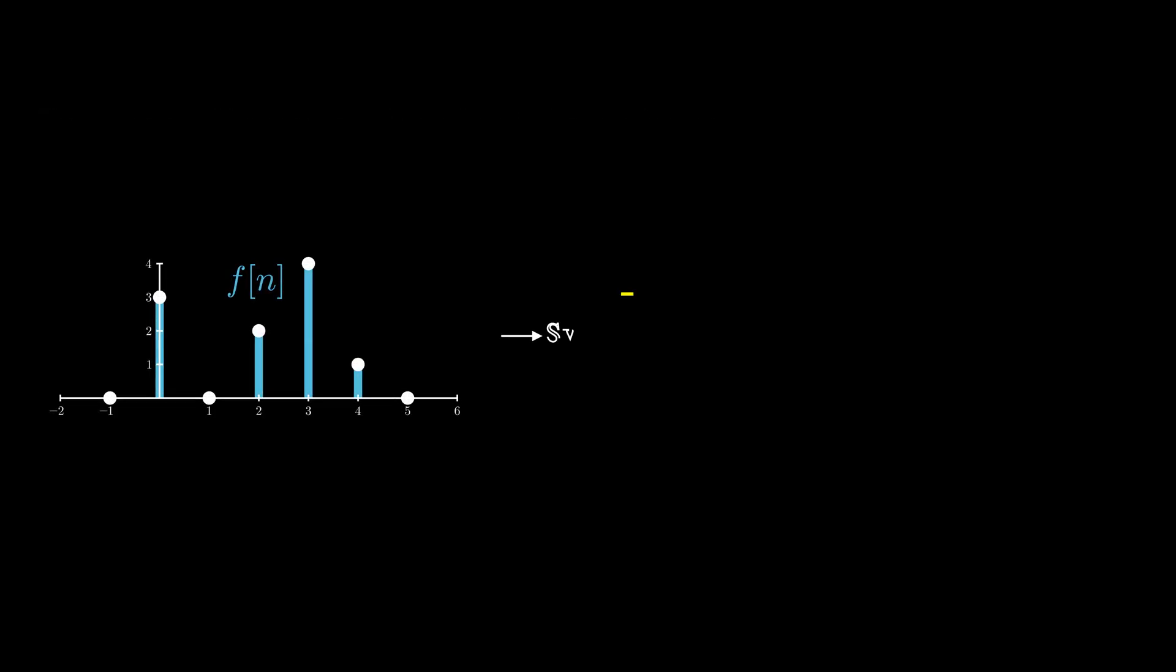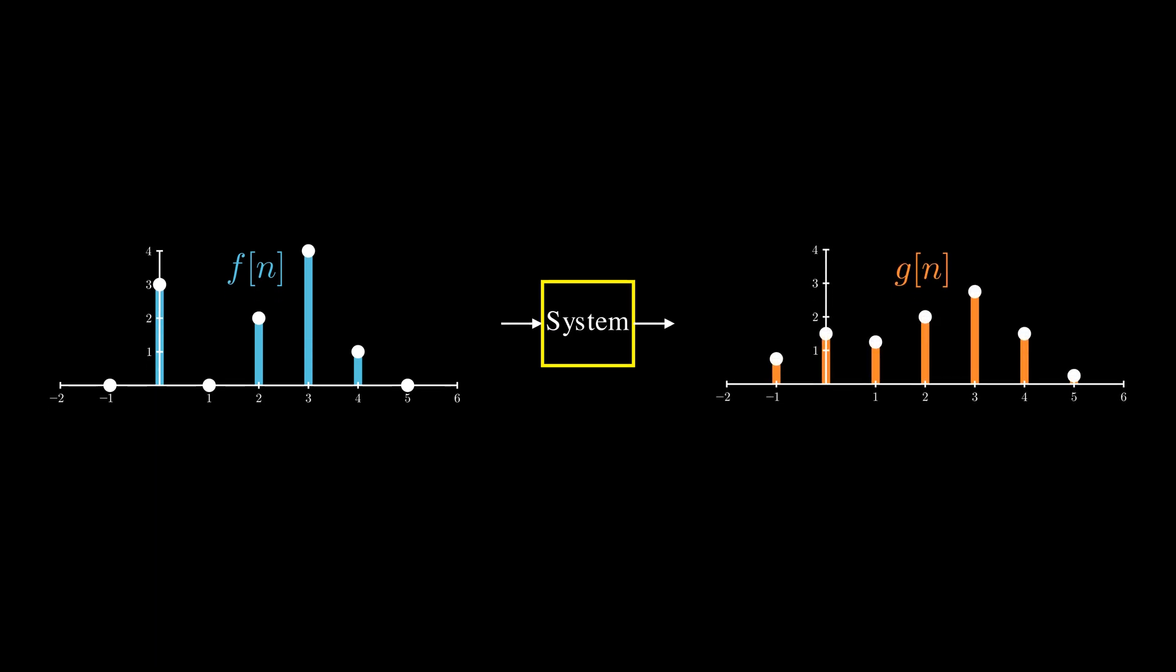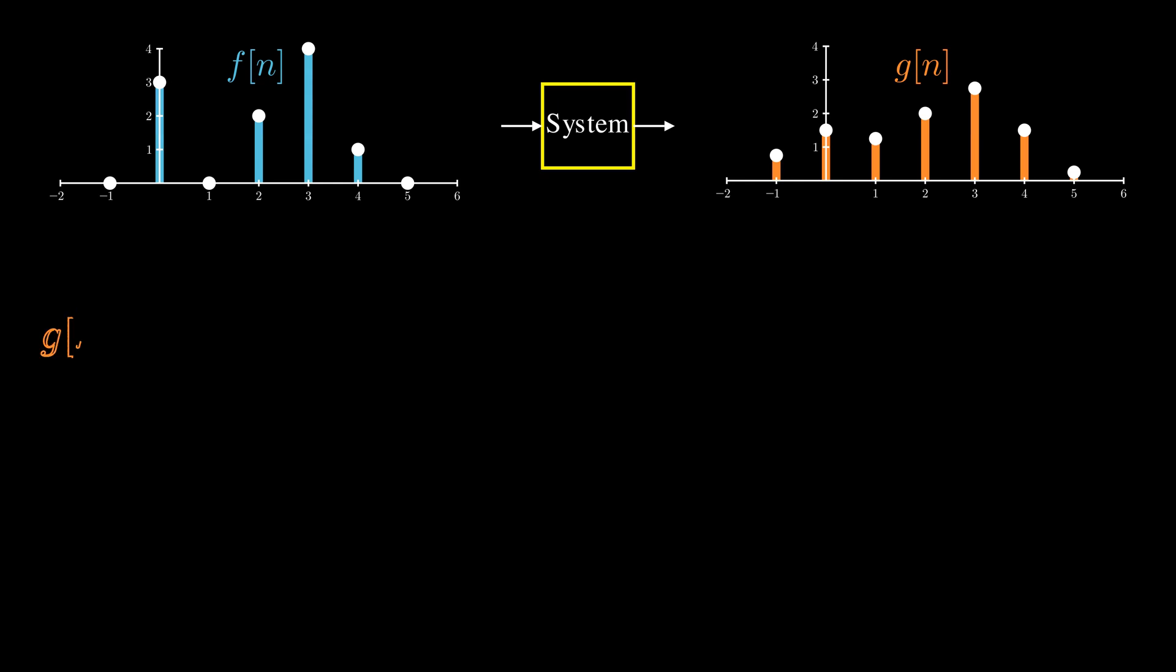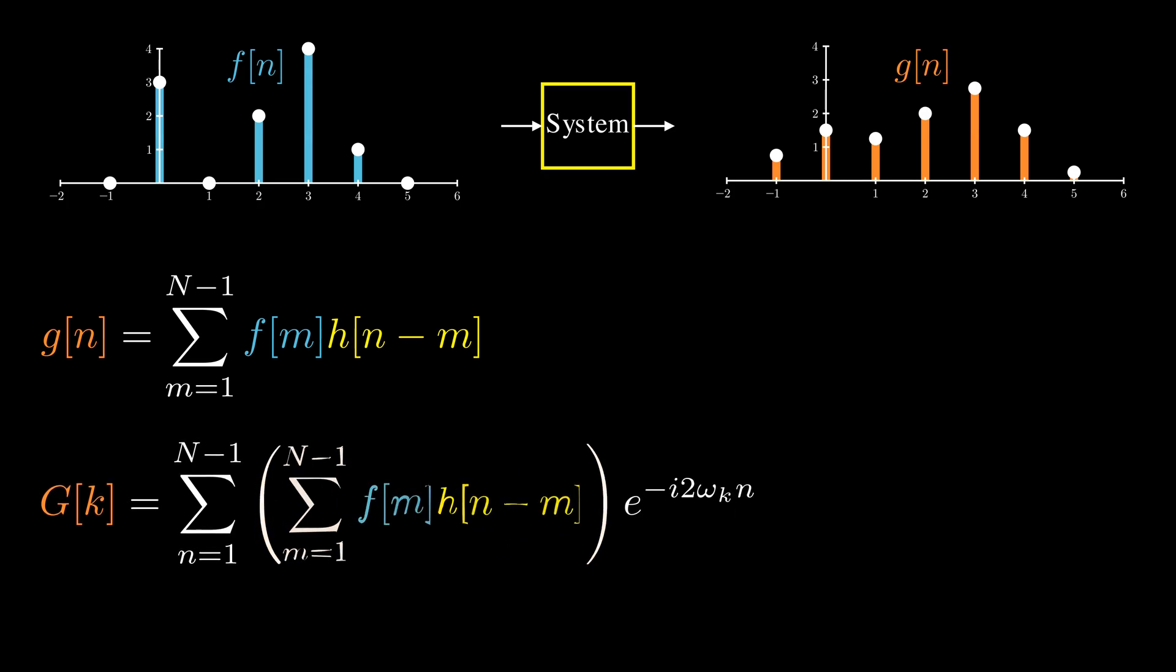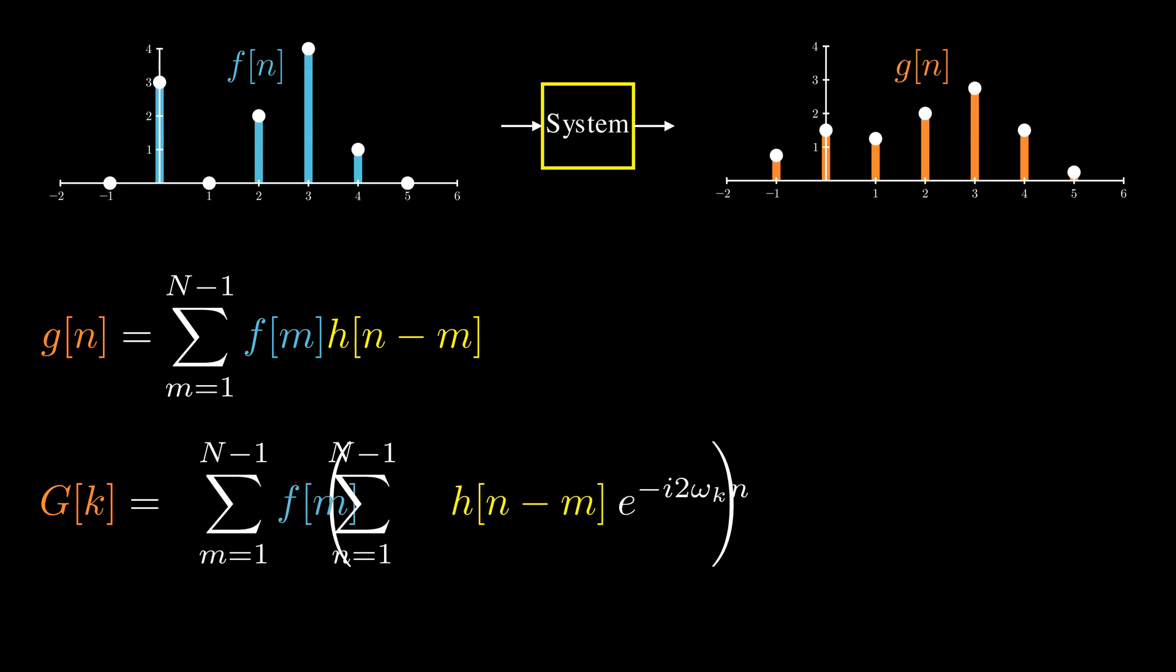Now we are ready to explore what a linear and shift invariant system do to a signal. For a LSI system, the output g is the convolution between the input signal f and the impulse response h. But what does the discrete Fourier transform of this output signal g look like? We can plug the convolution equation in and shuffle things around.